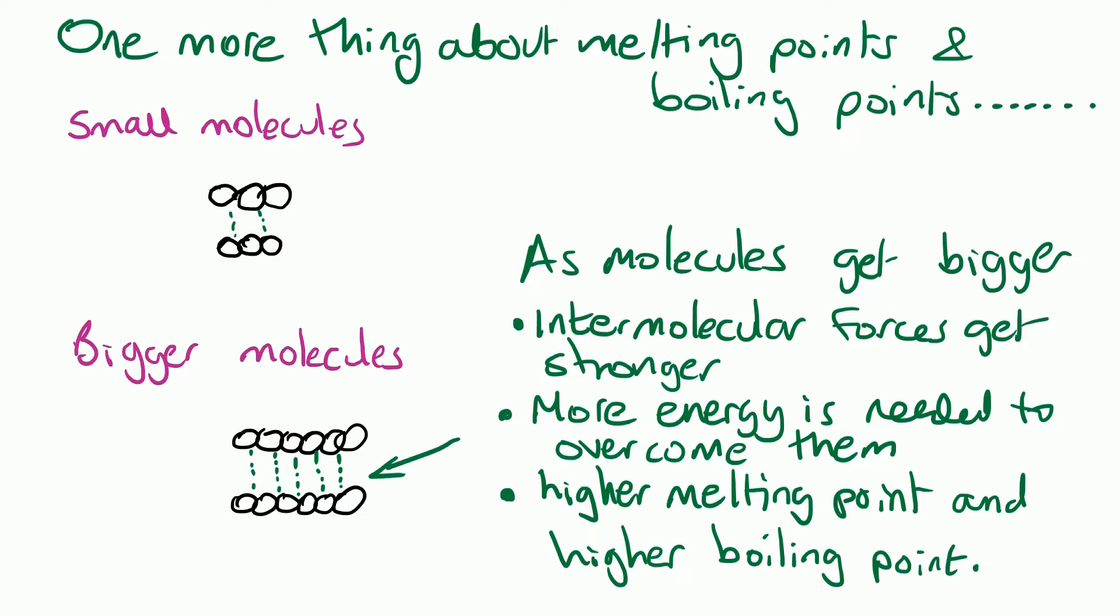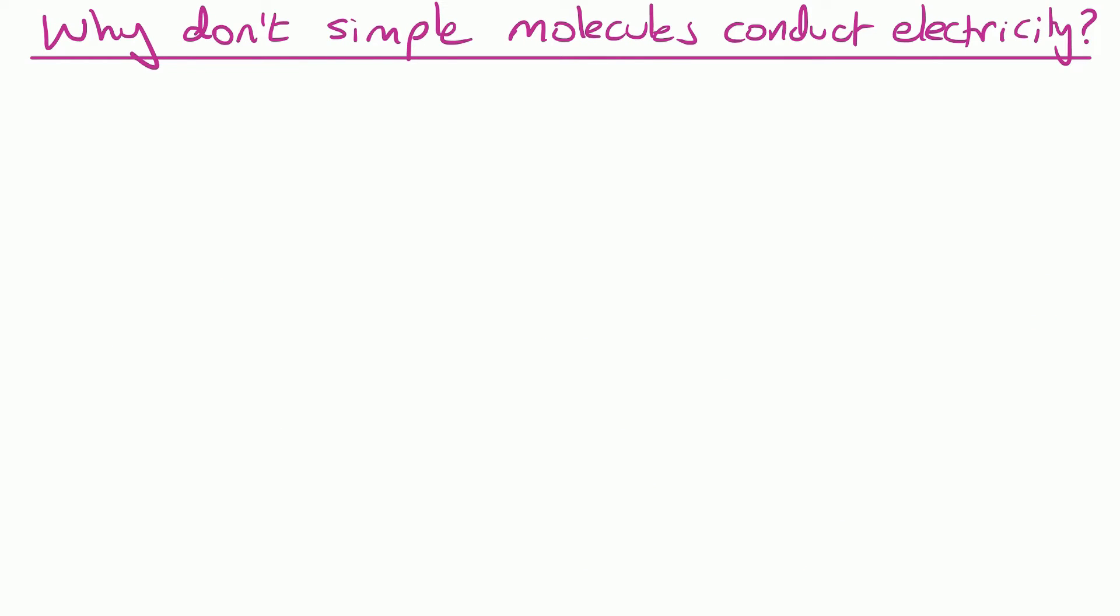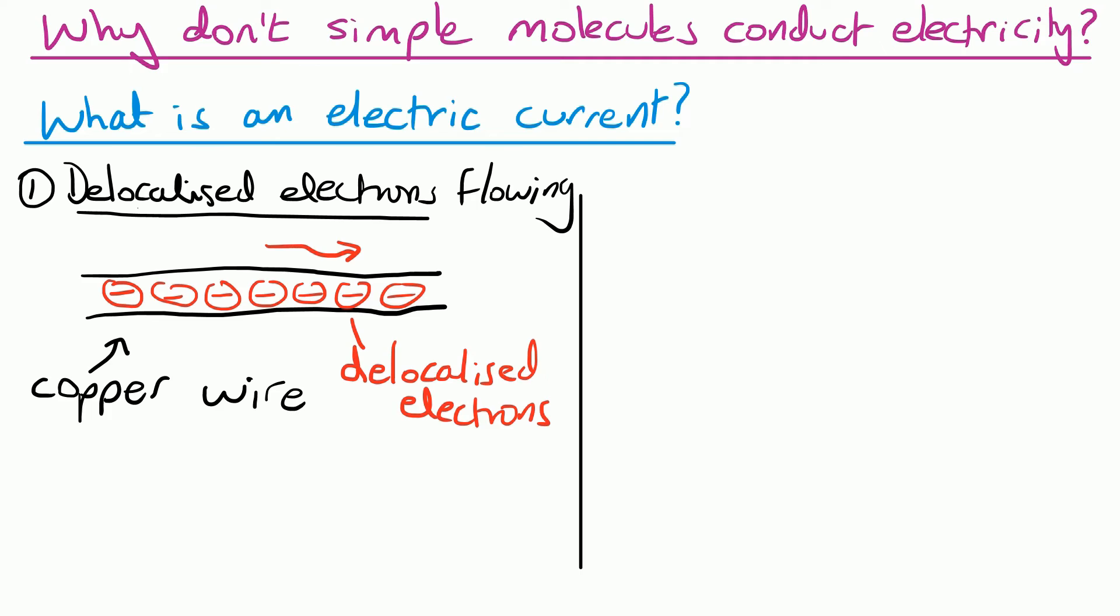You also need to be able to explain why simple molecules don't conduct electricity. So first of all we need a reminder of what an electric current actually is. Well an electric current is the flow or the movement of charged particles. So that could be either delocalized electrons flowing.